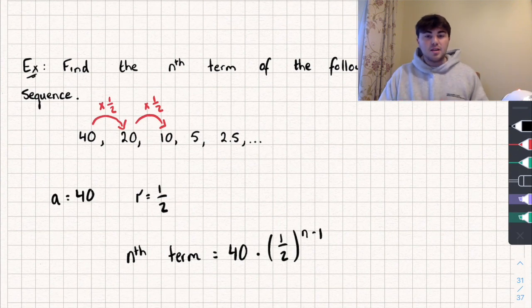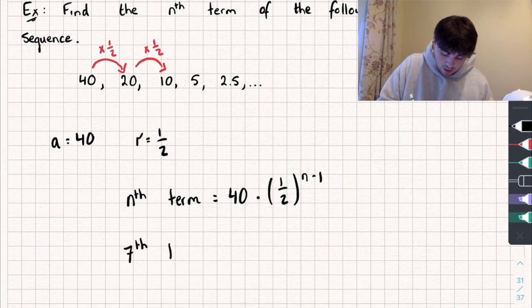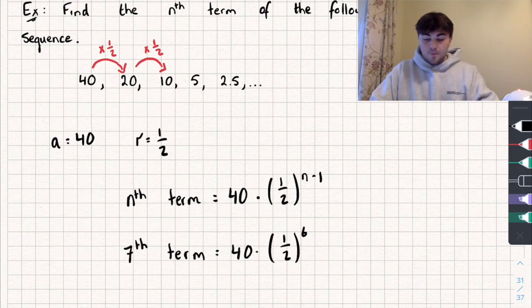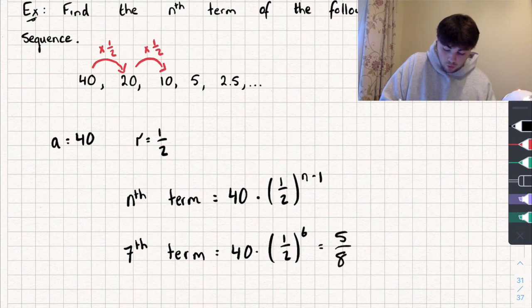And so say for that sequence there, we wanted to find the 7th term. The 7th term is going to be equal to 40 multiplied by 1 half to the power of 7 minus 1, which is 6. And so if I just work that out on my calculator, we've got 40 multiplied by 1 half to the power of 6. And that's going to give me an answer of 5 over 8.